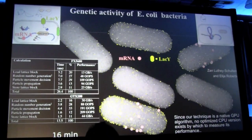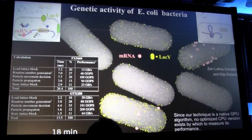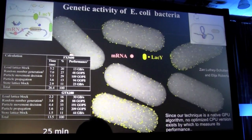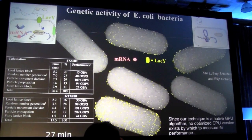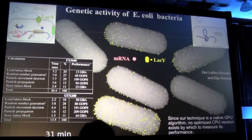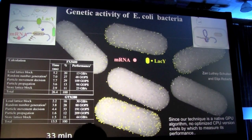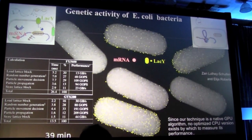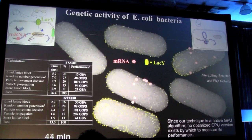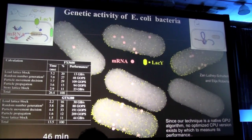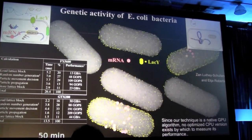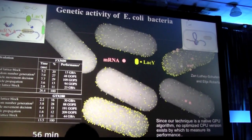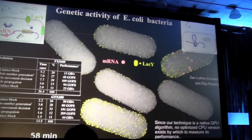Imagine that you have some E. coli cells on your kitchen table — you have it very clean, but you cannot prevent E. coli cells from being there. They are sort of dormant, but then when you spill milk, the milk molecules — lactose molecules — make it into the cell.